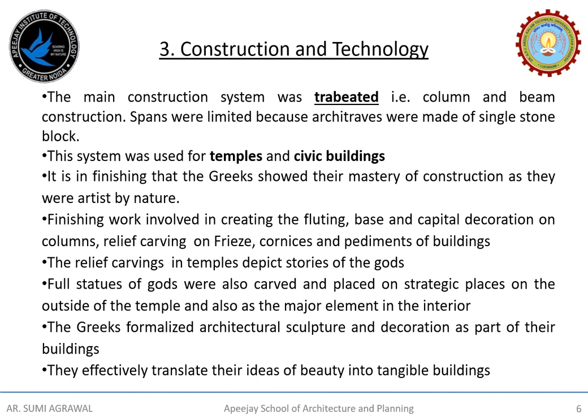Finishing work involved creating the fluting, base and capital decoration on columns. The frieze and cornice of the buildings, which were part of the entablature, were also decorated with appropriate relief carving made of forms from nature. Pediments were finished with relief carvings which, in temples, depict stories of the gods. Full statues of gods were also carved and placed on strategic places outside as well as in the interiors of the temple. The Greeks essentially formalized architectural sculpture and decoration, effectively translating their idea of beauty into tangible buildings.